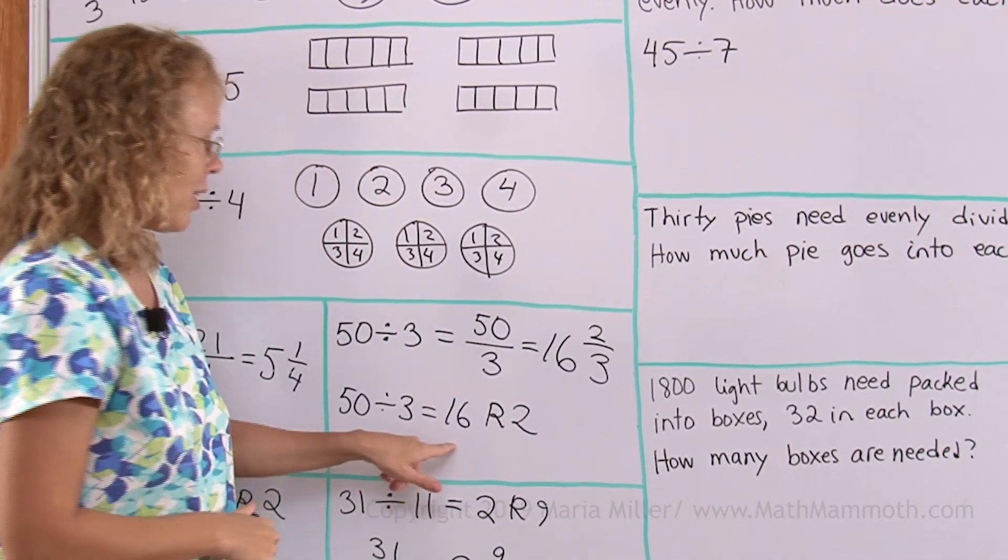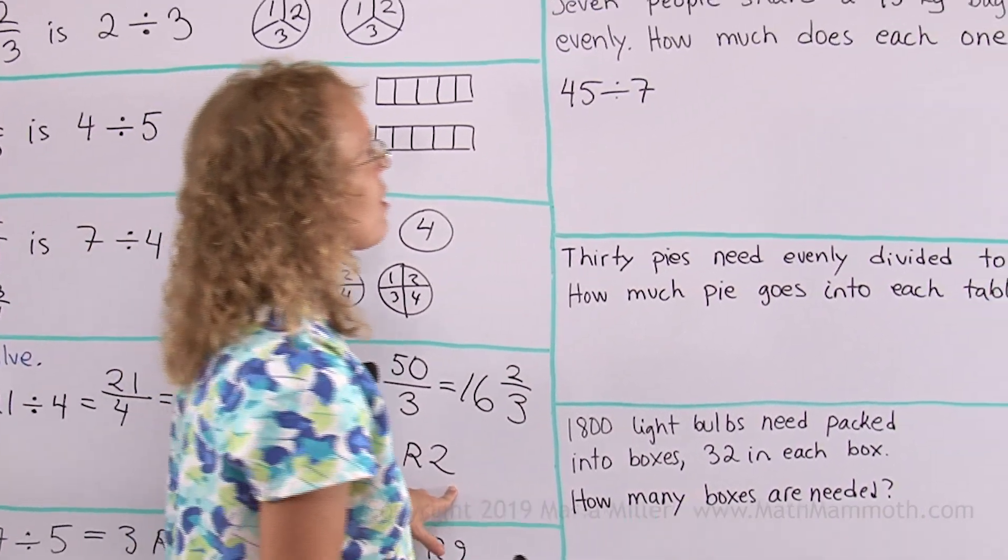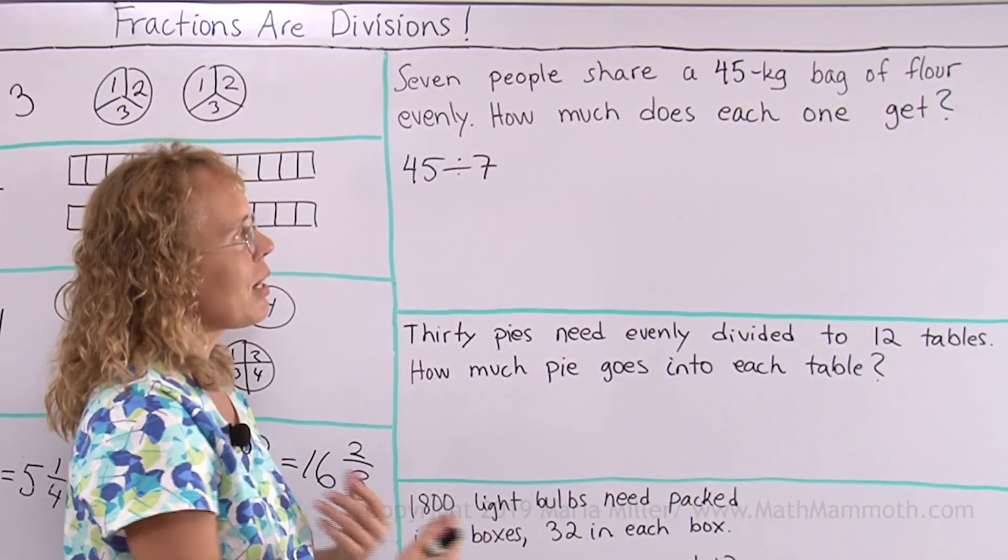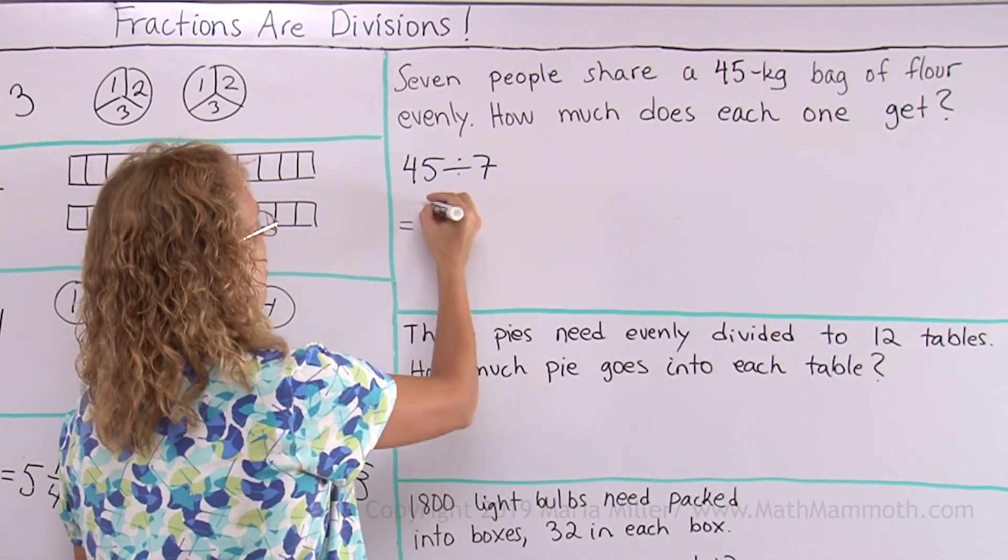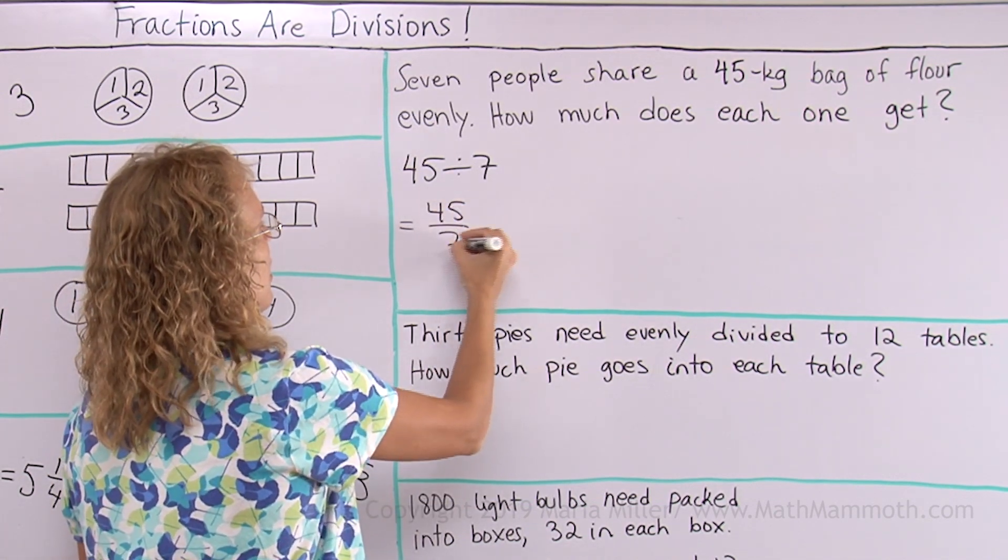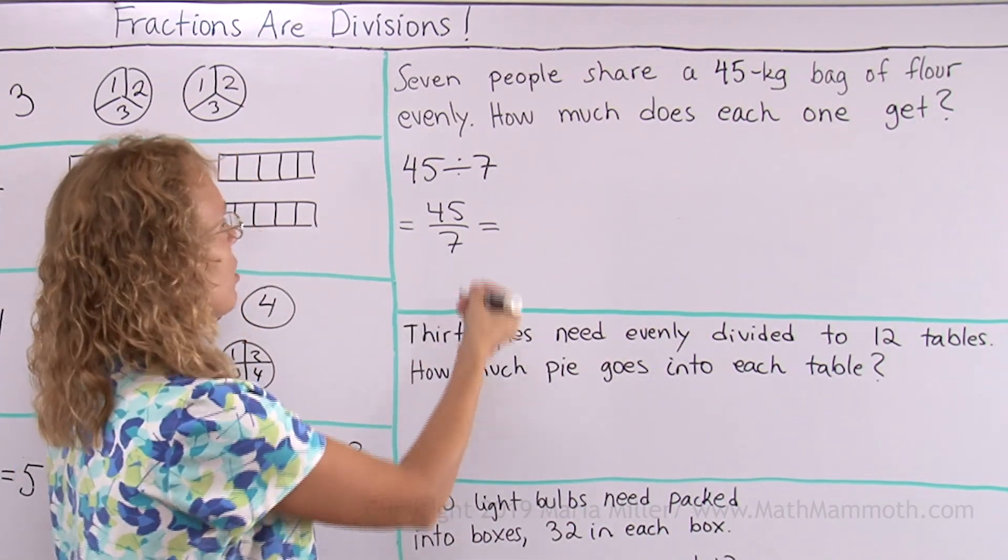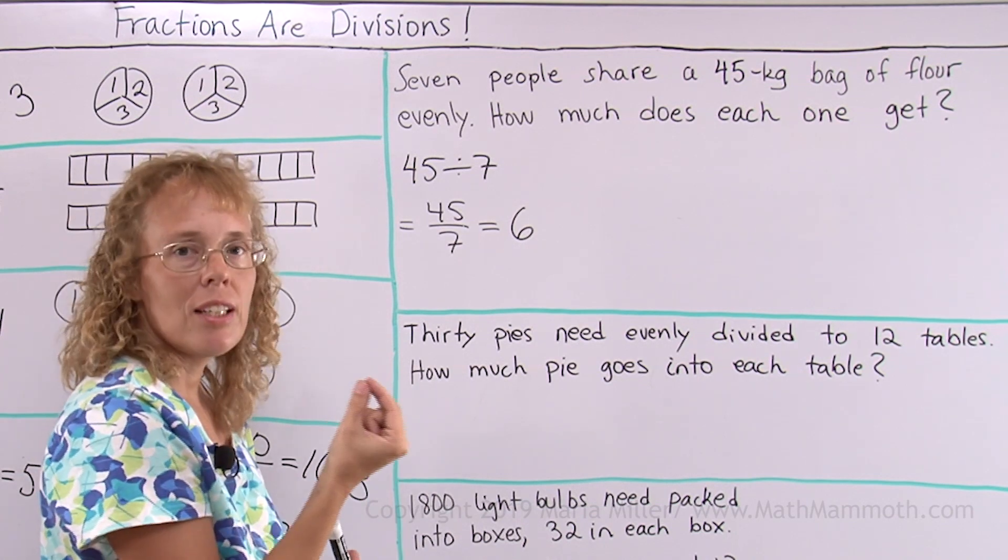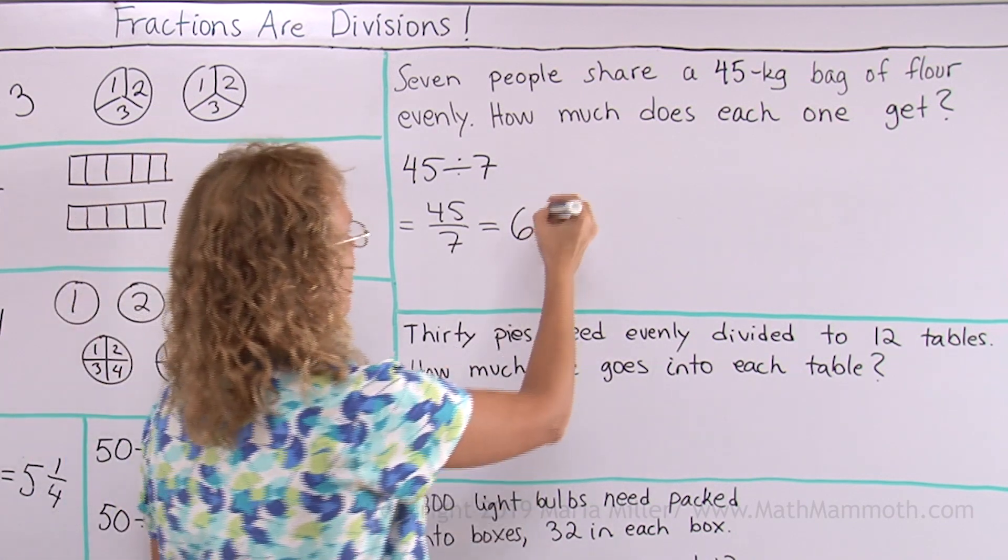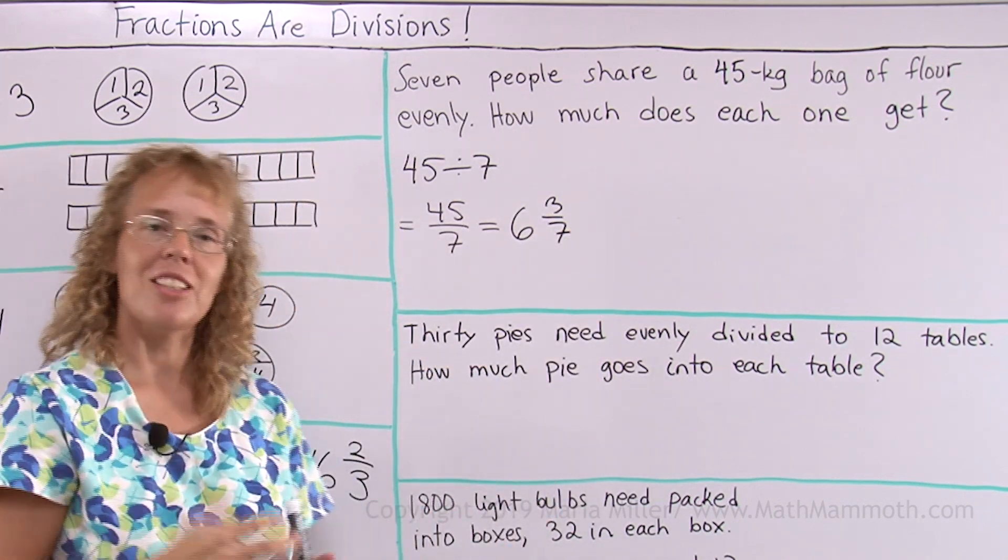We probably don't want to do it this way, where we leave some of the flour as a remainder, right? I don't think that would work for a bag of flour, but we can use the idea of writing it as a fraction, then writing it into a mixed number. Seven goes to 45 six times, so I have here six as my whole number, then the remainder three is going to be 3 sevenths. Everybody will get 6 and 3 sevenths of a kilogram.